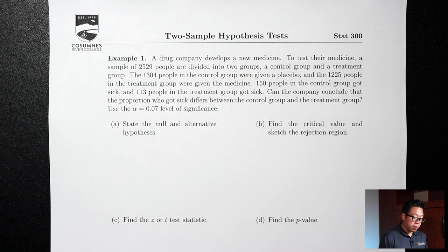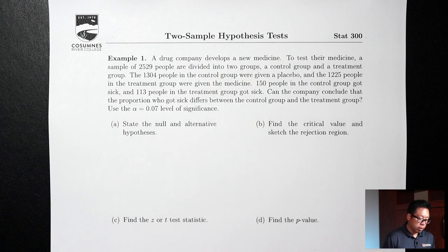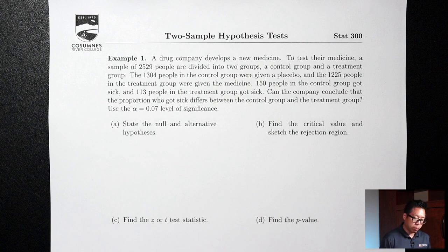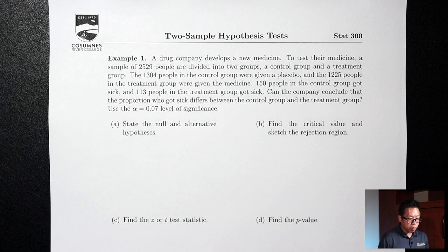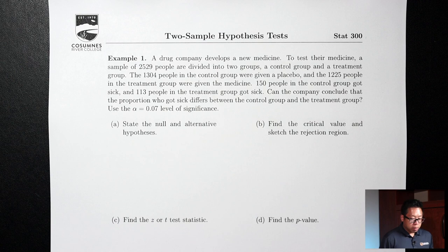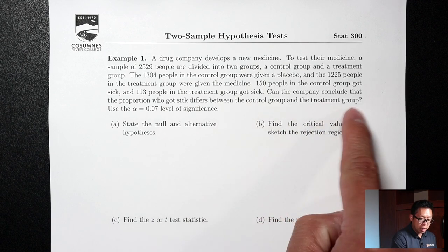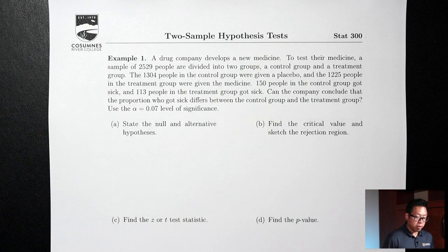Example 1. A drug company develops a new medicine. A sample of 2,529 people are divided into two groups: a control group and a treatment group. The 1,304 people in the control group were given a placebo, and the 1,225 people in the treatment group were given the medicine. 150 people in the control group got sick, and 113 people in the treatment group got sick. Can the company conclude that the proportion who got sick differs between the control group and the treatment group? Use the alpha equals 0.07 level of significance. Notice that we have two groups — a control group and a treatment group — so this will be either two proportions or two means.